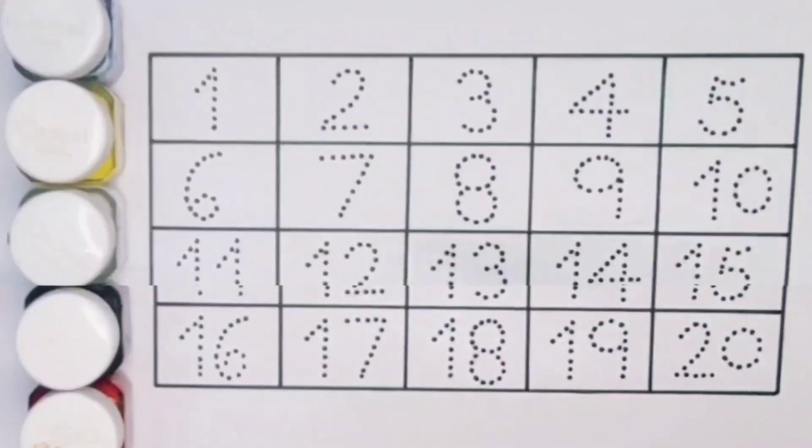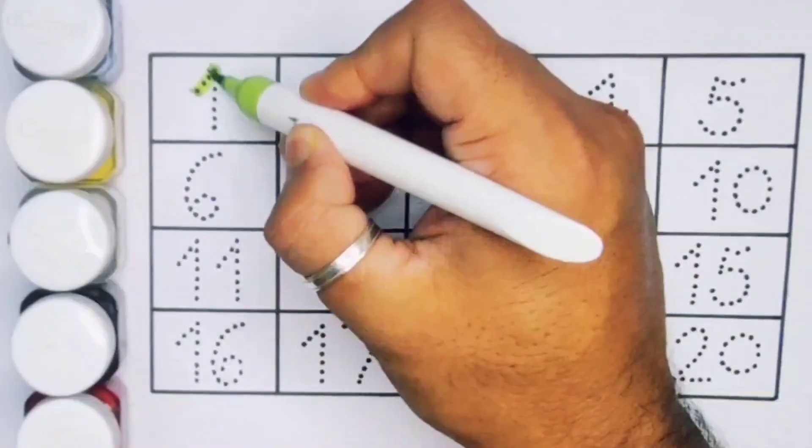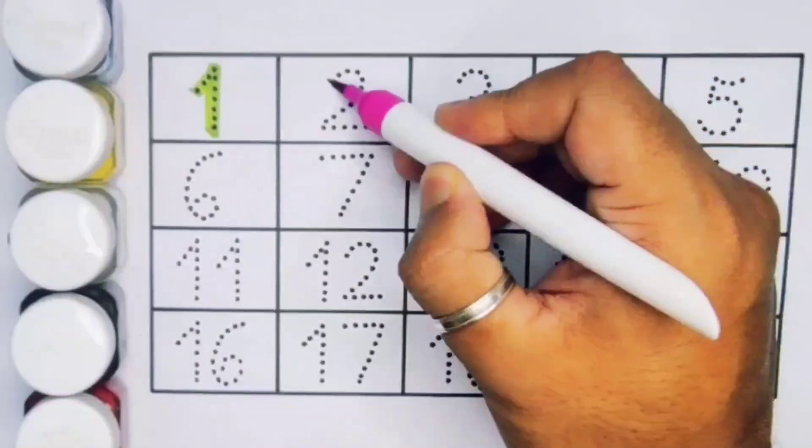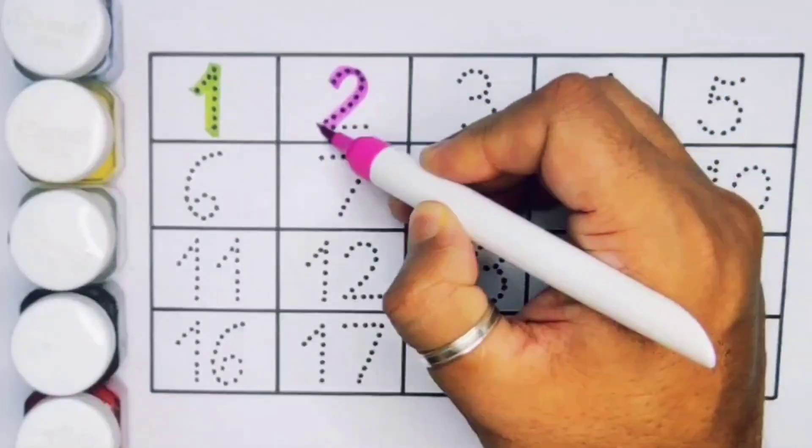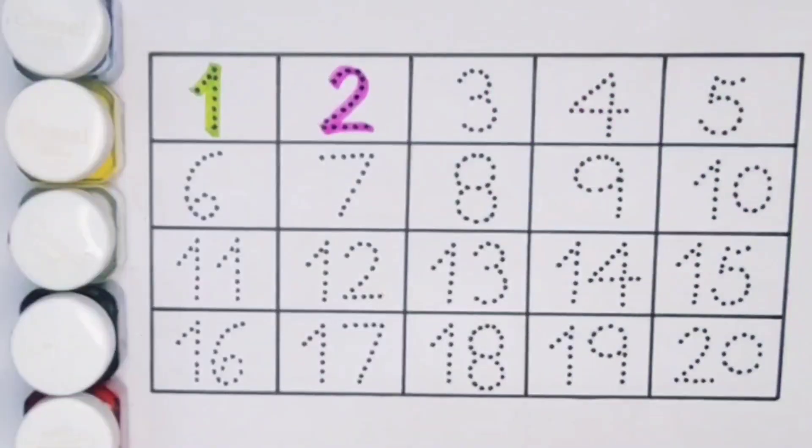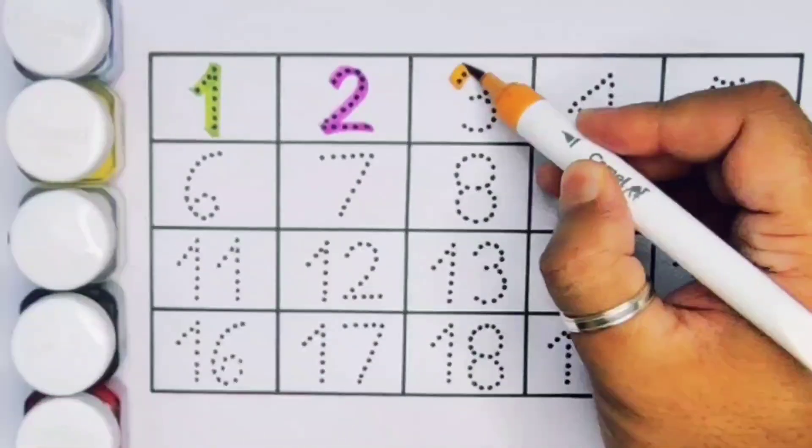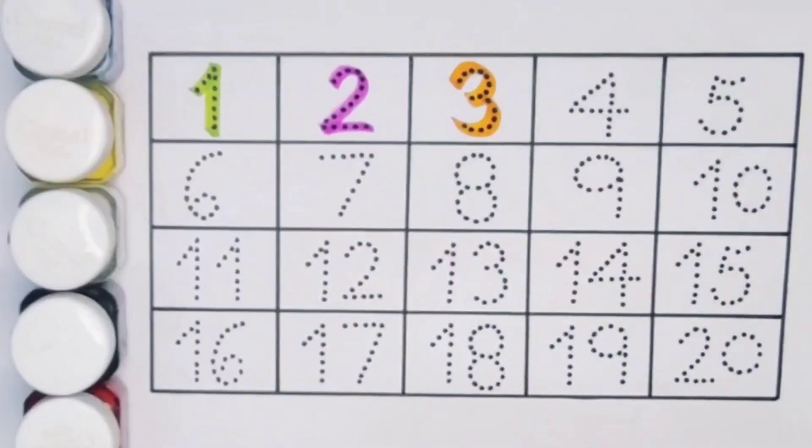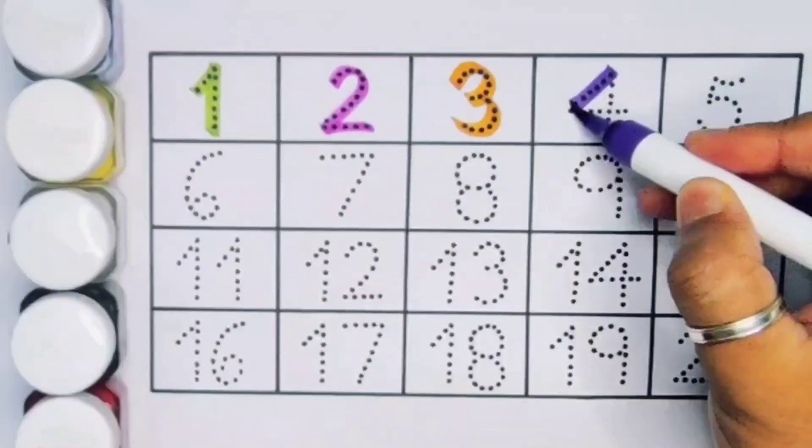First, number one. Next kids, two, number two. Next, three, number three. Next kids, four, number four.